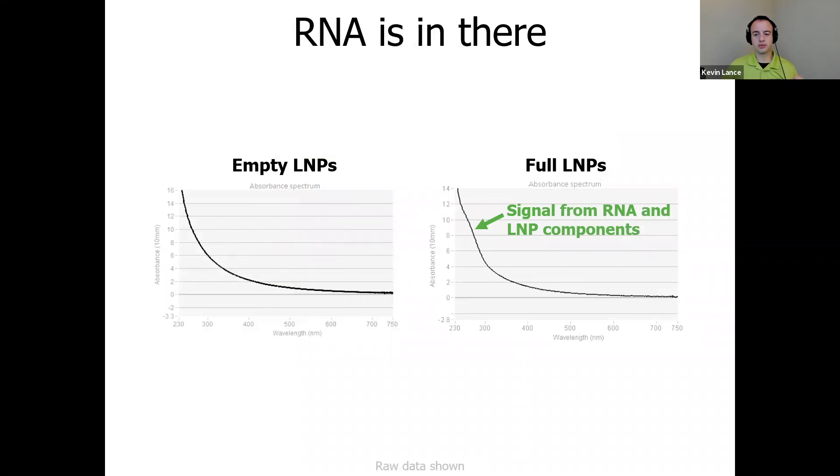If we are trying to deal with all that turbidity, it can make quantifying with traditional UV-Vis almost impossible, but total RNA quant by UV-Vis is normally a big challenge on other instruments and not on Stunner. So for example, if we squint at the full curve shown on the right, we can see the RNA bump at about 260 nanometers, but the difference is pretty small when we're comparing the empty curve and the full curve. So to analyze this, we have to separate out the turbidity signal from the LNP absorbance due to RNA and other LNP components.